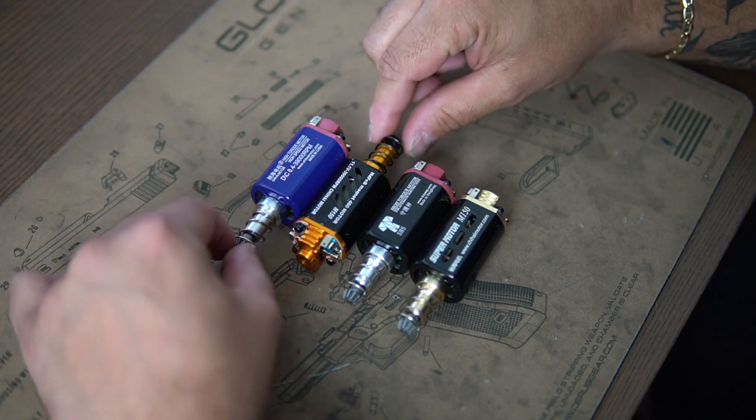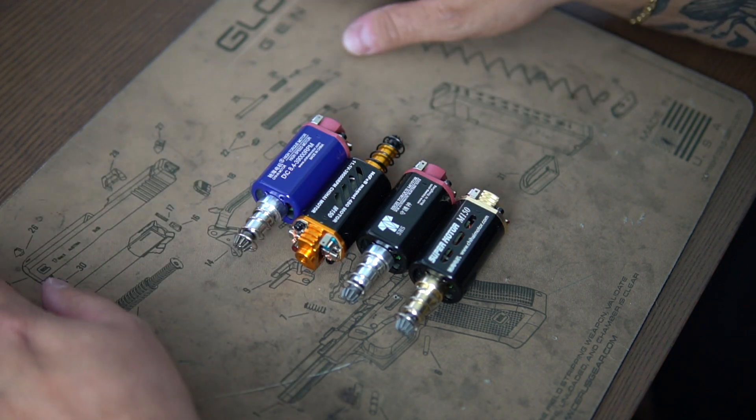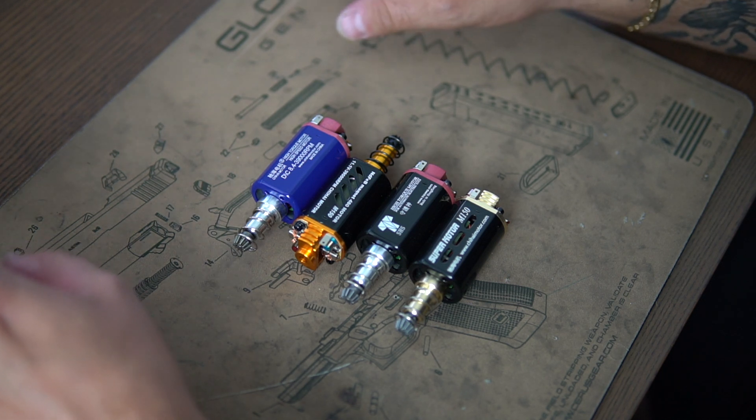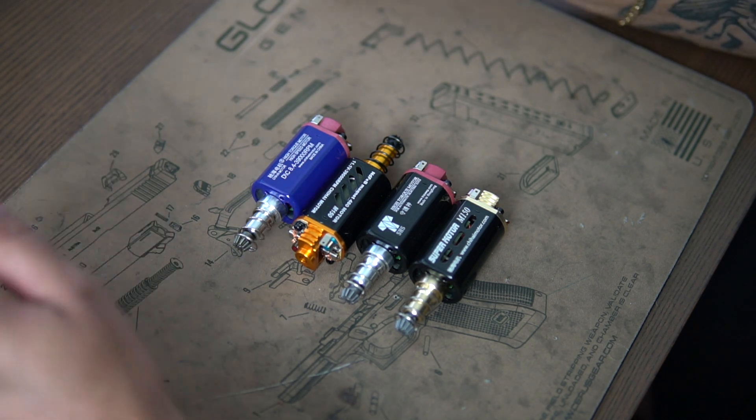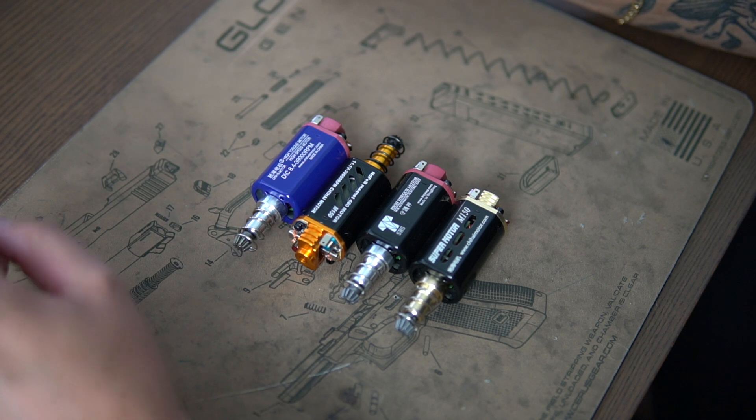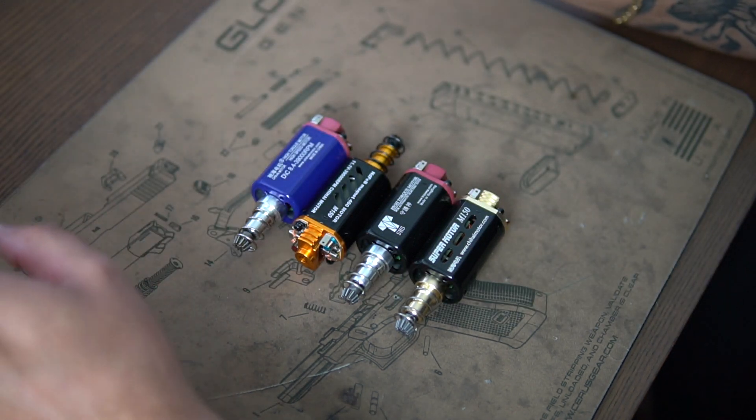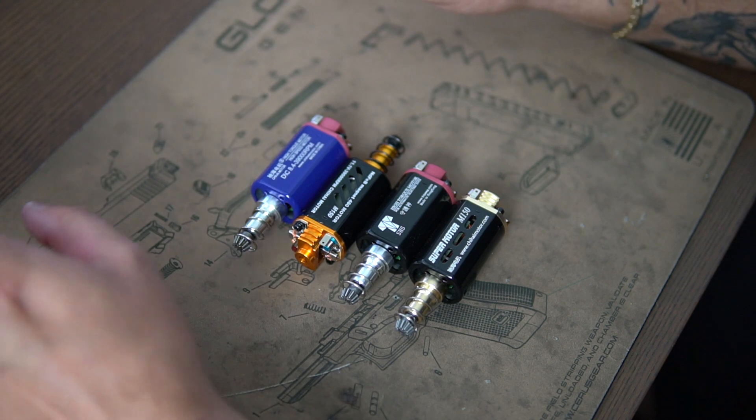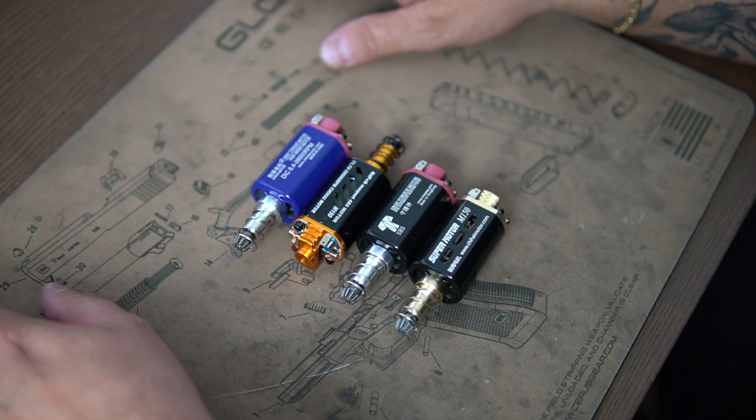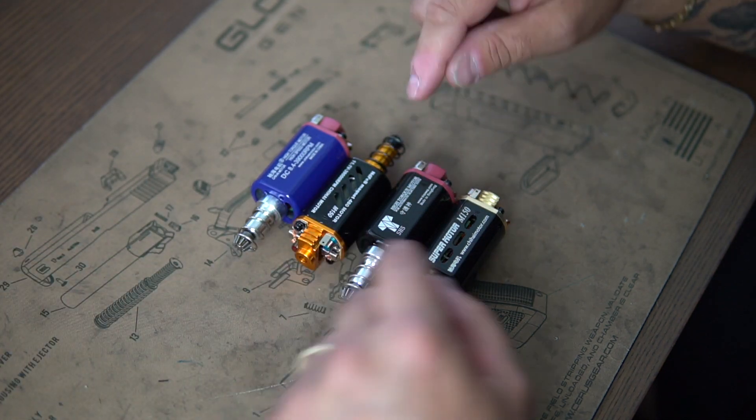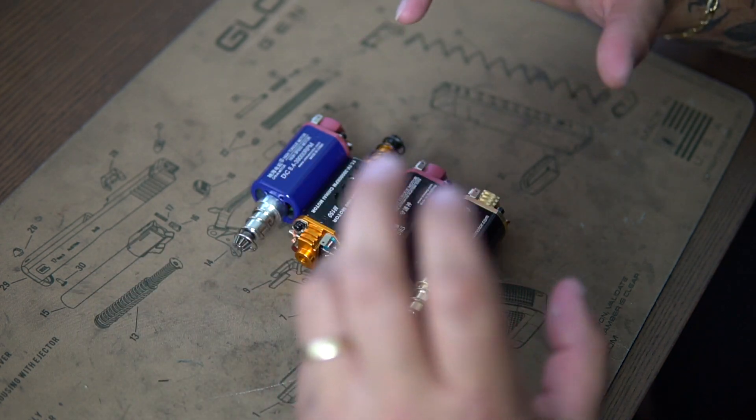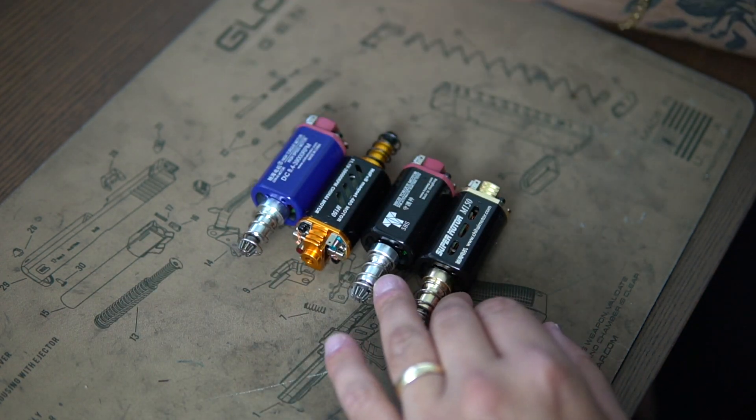So moving on to our high torque motors. Obviously we thrive on high torque motors because we like to push big springs. We like to push big solid builds. So just because it is high torque does not mean it is slow at all. What we have here is a mixture between high torque and high speed motors combined into one where the purple motor is just high speed by itself.